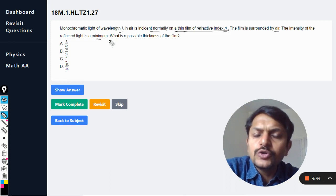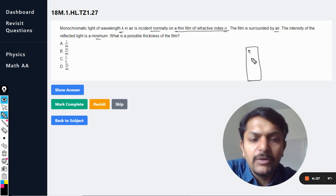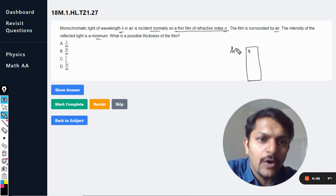This question belongs to thin film interference. As I have earlier discussed in a couple of other videos, whenever there is a film of refractive index n which is surrounded by air on both sides, the formula for destructive interference is exchanged with the constructive one.